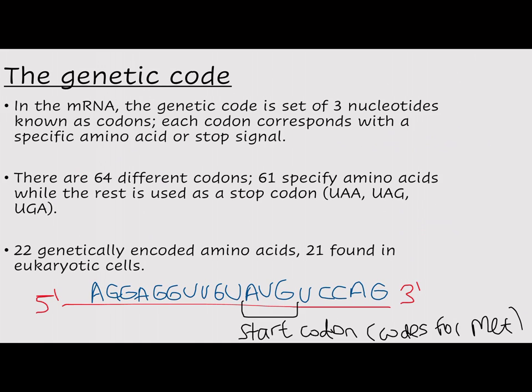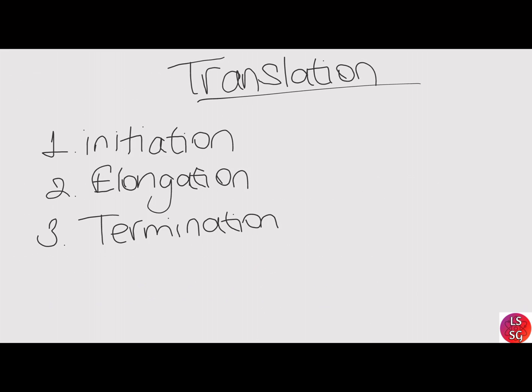There are 22 genetically encoded amino acids, with 21 found in eukaryotic cells. AUG is the start codon that codes for methionine. Translation of messenger RNA by the ribosome occurs in three steps: initiation, elongation, and termination.